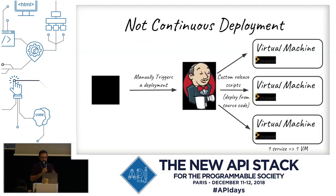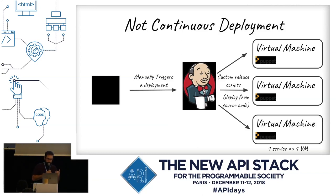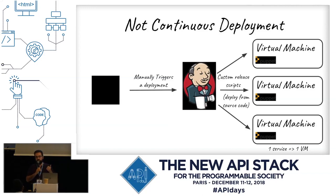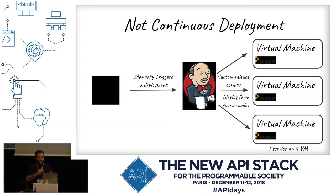For continuous deployment — which was not really continuous — we also used Jenkins. When someone wanted to release a new version, they went to Jenkins, specified the version, and we ran custom relay scripts using Capistrano to deploy to virtual machines. We had one virtual machine per service instance, managed by Puppet for the system layer. The scripts would go on the VM, update the application code, and restart the application.